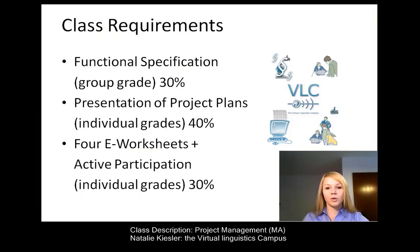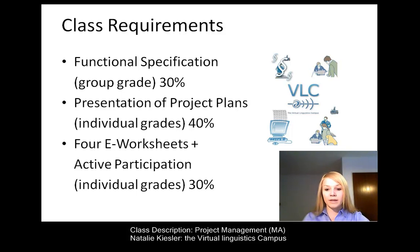Finally, you want to know what you have to do in order to get the four class credits, which are awarded for about 120 hours of workload. First of all, you have to submit a functional specification, which will be graded as a group. Then you have to present your project plans, which will be an individual grade. And you also have to submit four e-worksheets and participate in the class, of course, and this will also be an individual grade.